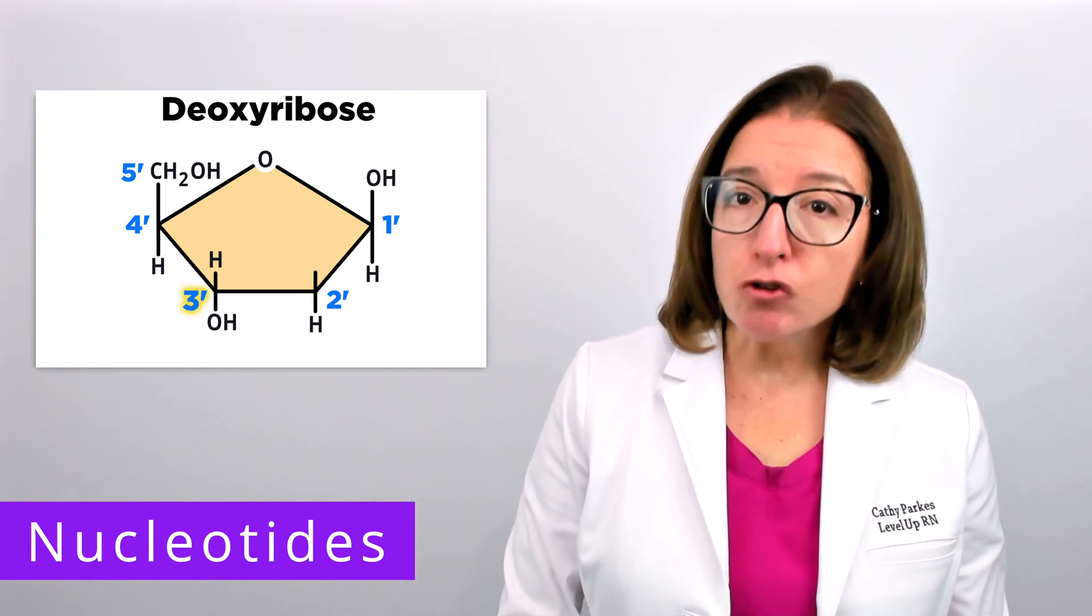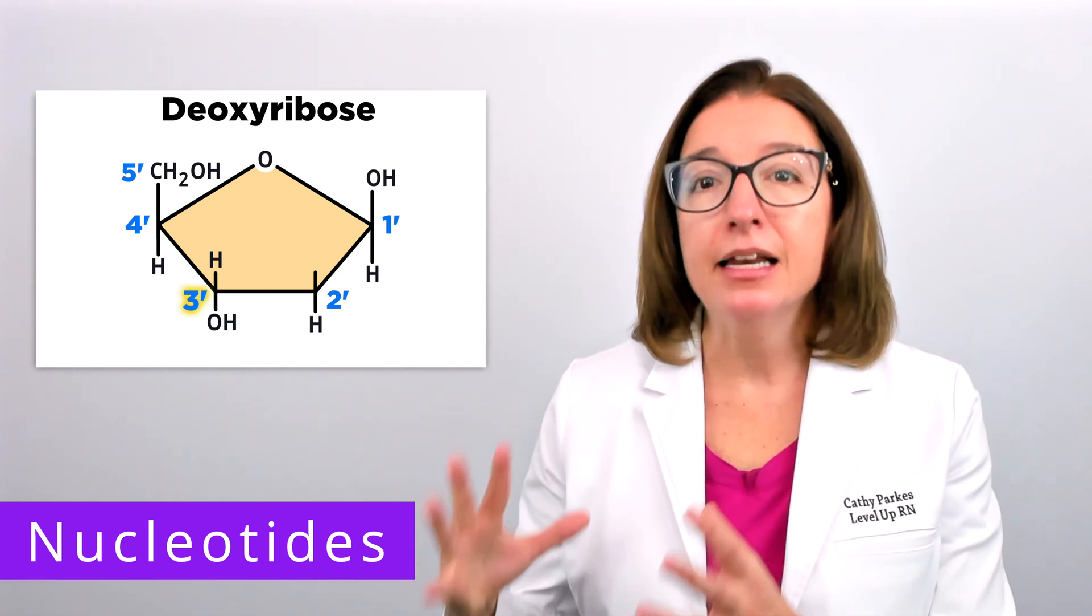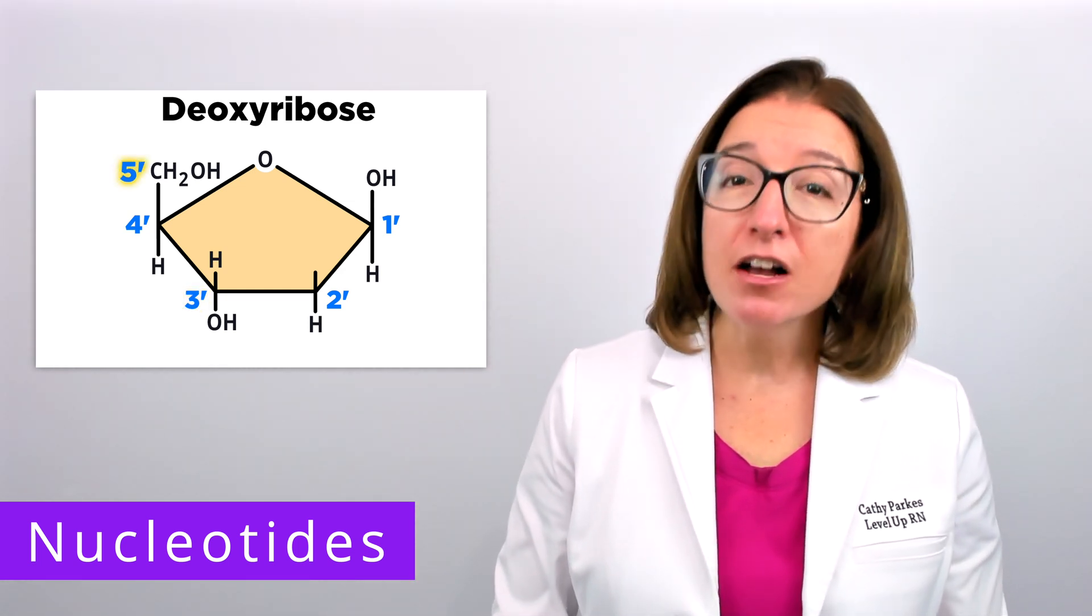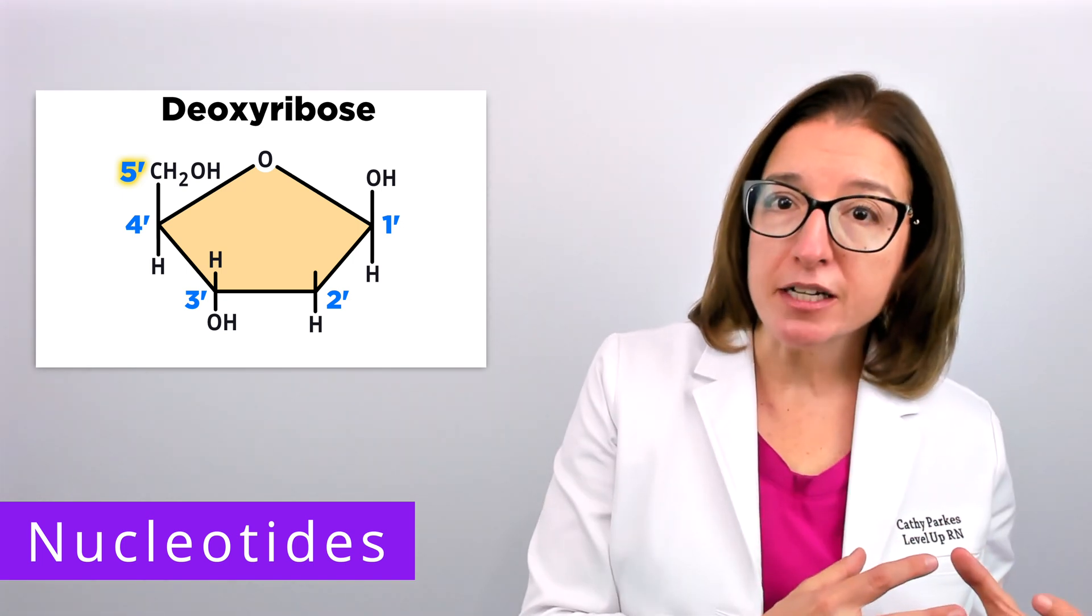The 3' carbon is connected to the hydroxyl group and is used to attach to the next nucleotide in the chain. And then the 5' carbon is connected to the phosphate group and is used to attach to the previous nucleotide in the chain.